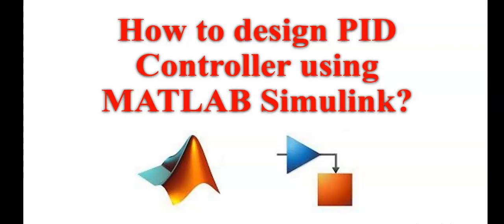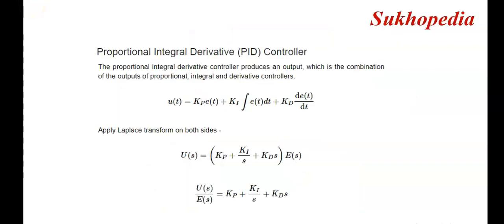Before designing the PID controller, here we discuss some basics about PID controller. PID means Proportional Integral Derivative. The PID controller produces an output which is the combination of outputs of proportional, integral, and derivative controllers. Therefore, u(t) = kp·e(t) + ki·∫e(t)dt + kd·de(t)/dt, where kp is the proportional constant, ki is the integral constant, and kd is the derivative constant.